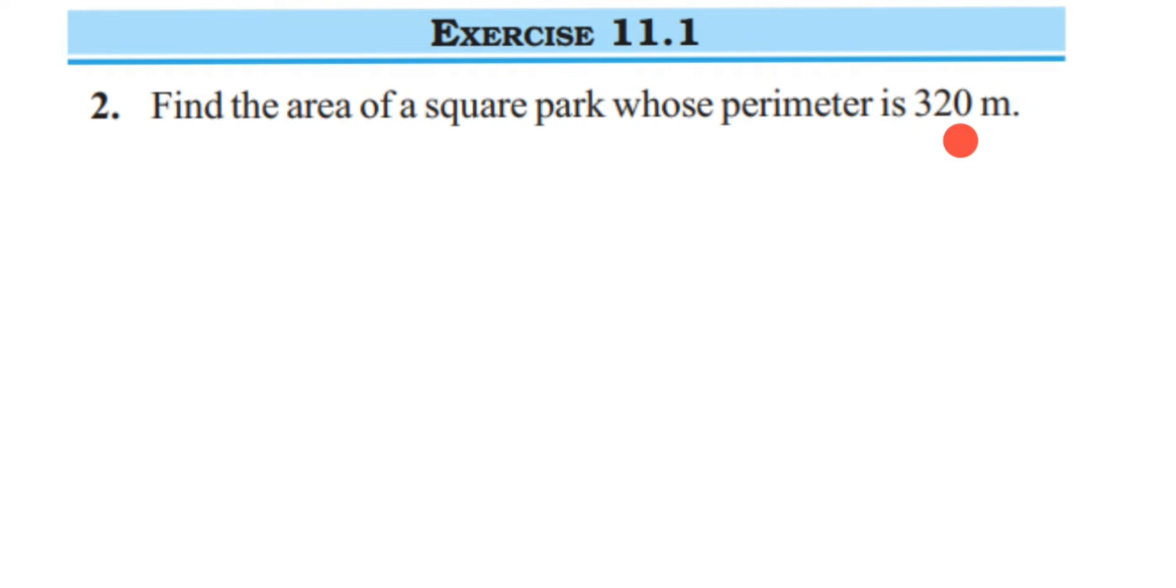We have given only one thing, which is the perimeter of 320 meters. We have to find the area of the square park. Since the park is in the shape of a square, we are going to use the formula for perimeter of a square.